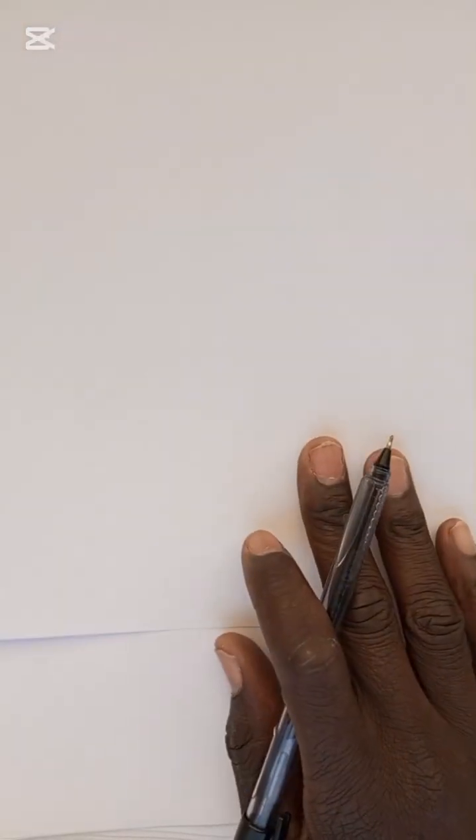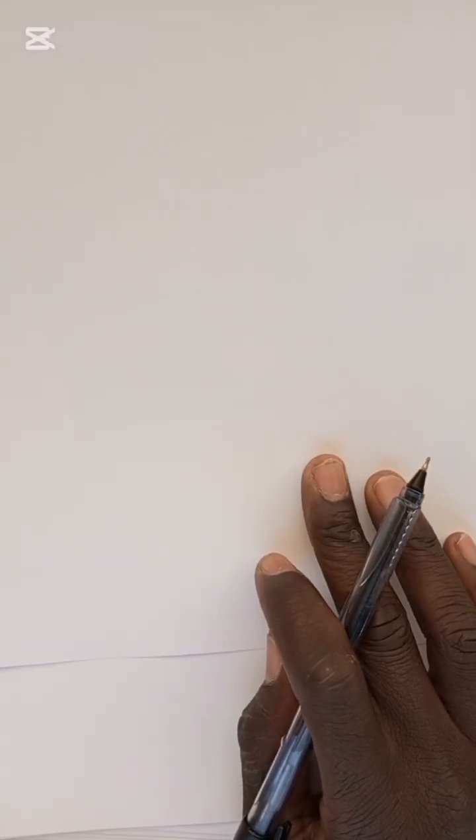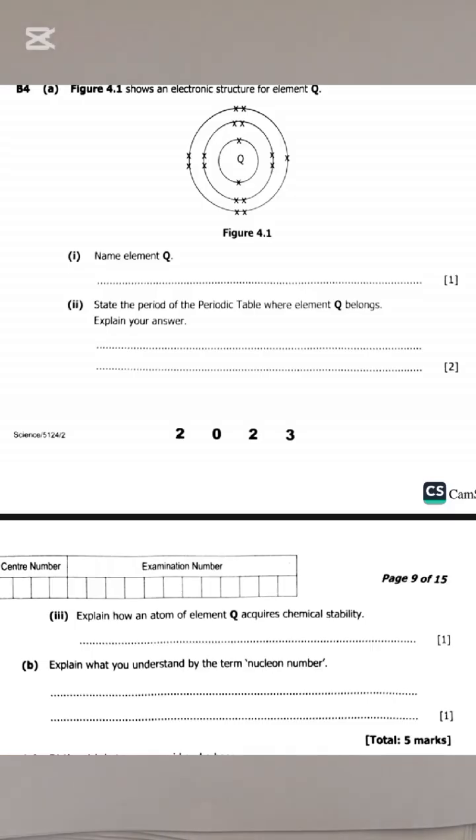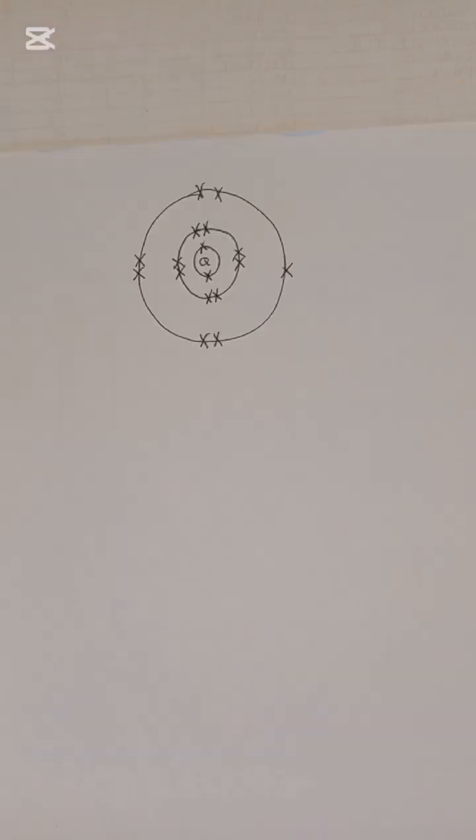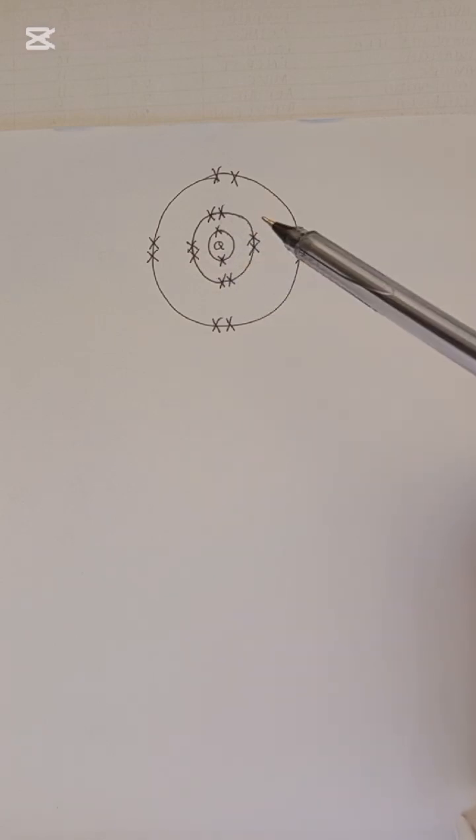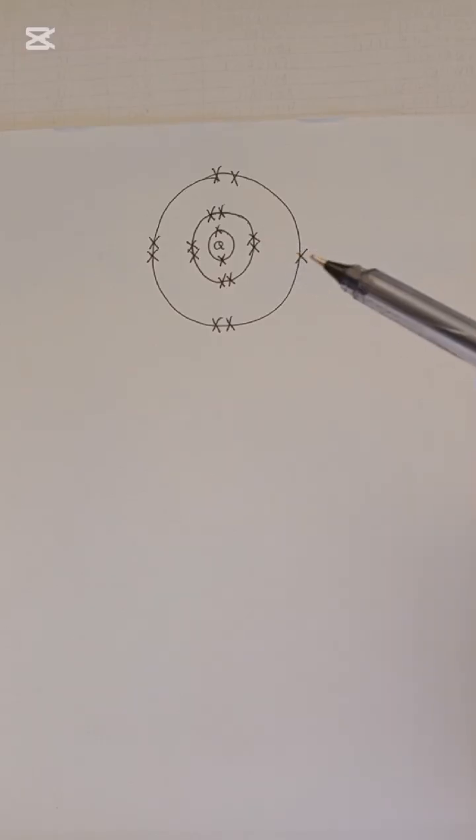Good day viewers. In this video we are going to go through Science Paper 2 2023, Question 4 in Section B. The question reads: Figure 4.1 shows an electronic structure for element Q. Element Q has an atomic structure where the first shell has two electrons, the second shell has eight, and the third shell, which is the outermost shell, has seven.